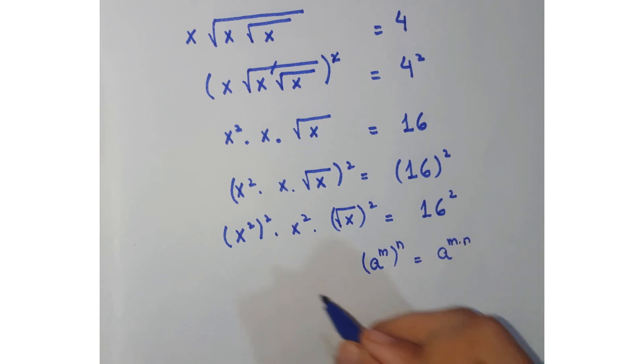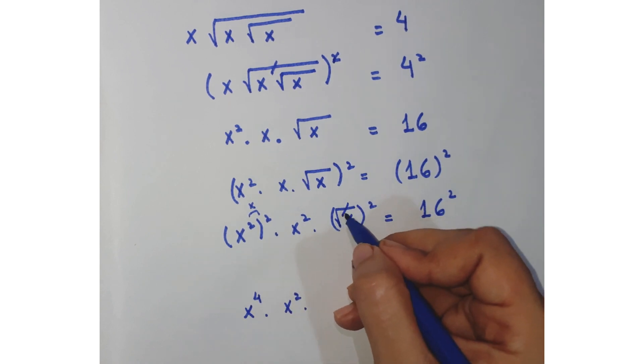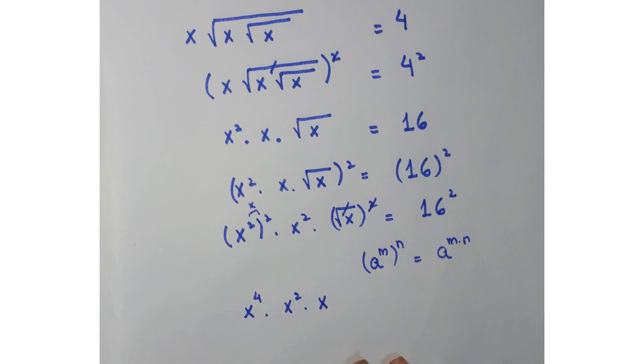So these two are just multiplied and you will get x⁴ · x² and here this root and this square is cancelled and you get x.